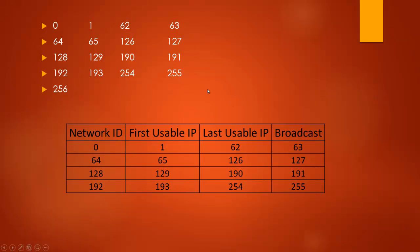When you make this range chart, you can answer any question they throw at you. What's the first usable IP address of the second network? 65. What's the last usable IP address of the third network? 190. What is the third usable IP address of the fourth network? The first is 193, then 194, 195 — so 195. What's the broadcast of the first? 63. Just take 0, add the range repeatedly, subtract 1 to fill the right column, fill in the middle, and you're all set.